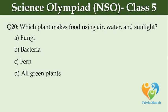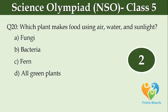Which plant makes food using air, water and sunlight? Option A: fungi, Option B: bacteria, Option C: fern, Option D: all green plants.